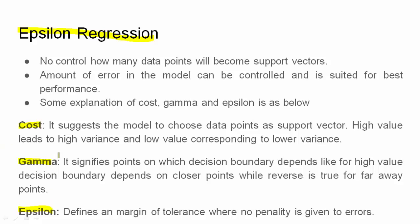Epsilon regression means there is no control on how the data points will become the support vector. The gamma function has no control on which data points will become the support vector. This is the concept of the cost function, because it is only the cost function which suggests the model which data points can be support vectors.